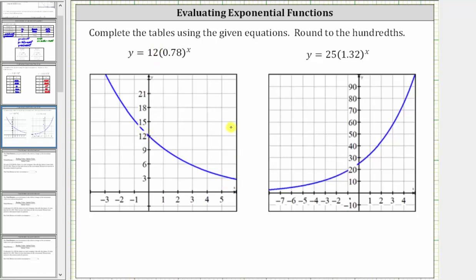In the second graph, the graph is increasing because we have exponential growth. Notice a is 25 and the vertical intercept is zero comma 25. I hope you found this helpful.